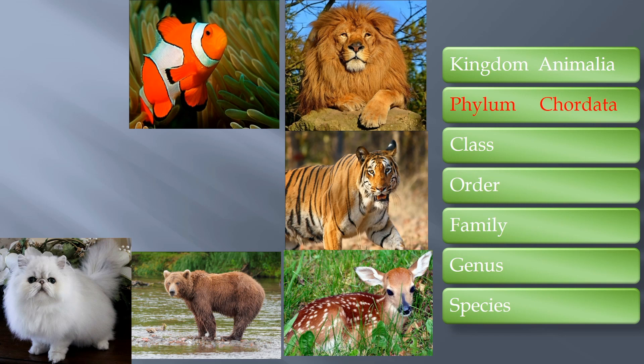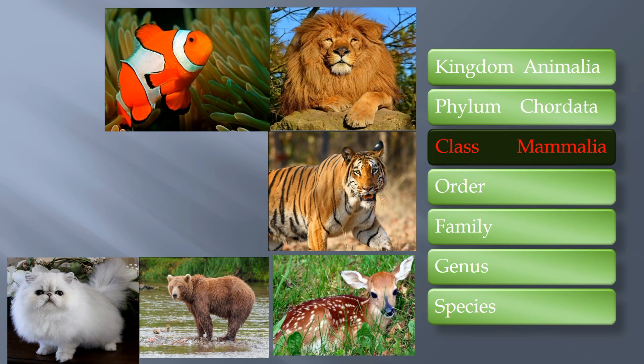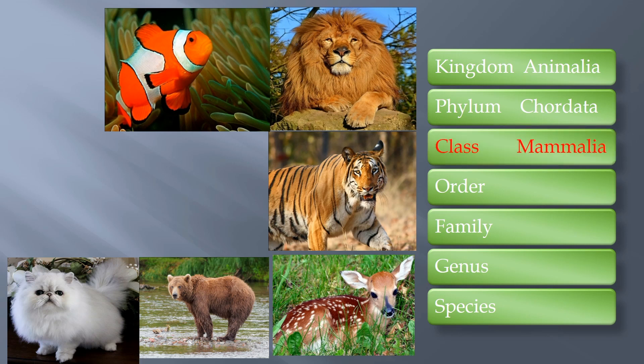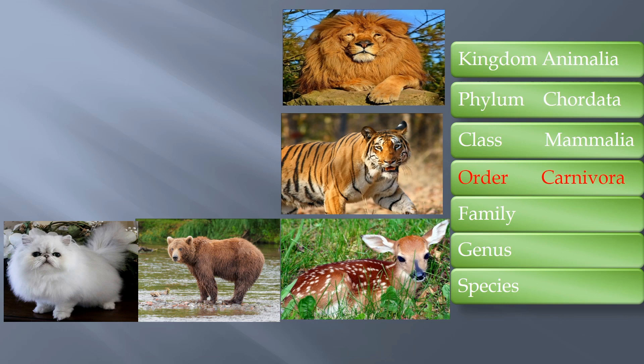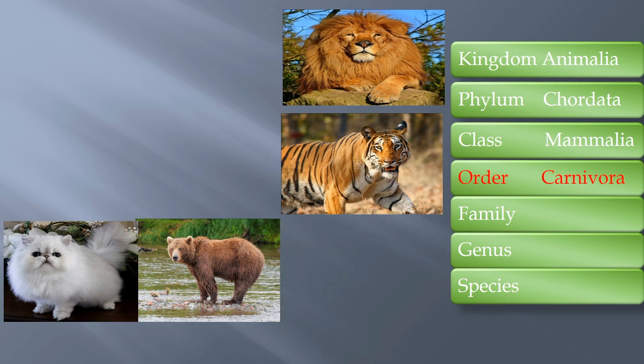The next level of the category is class Mammalia — the mammals that have hair and fur. The fish will be removed as it is not a mammal. The next level of this category is order Carnivora, which means flesh-eating animal. Here, deer is a herbivore — a plant-eating animal — so it is removed.